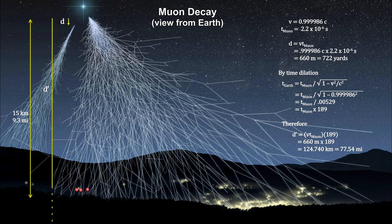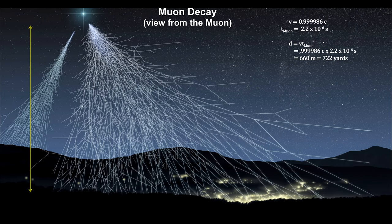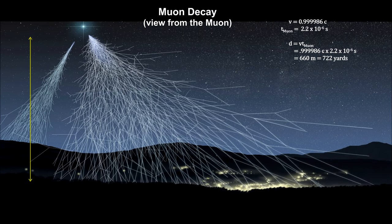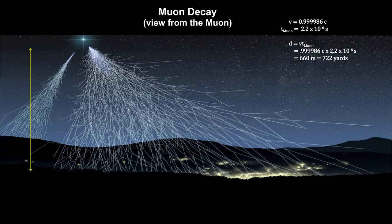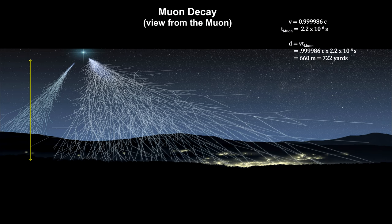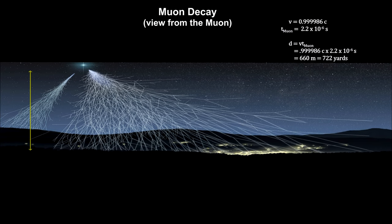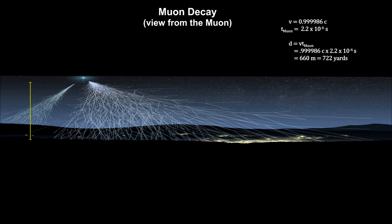But what does this look like in the muon's own reference frame, where it is standing still, and the Earth is approaching at 0.999986 times the speed of light? It will only last 2.2 microseconds. How will it make it to the surface? This is where space contraction comes in.